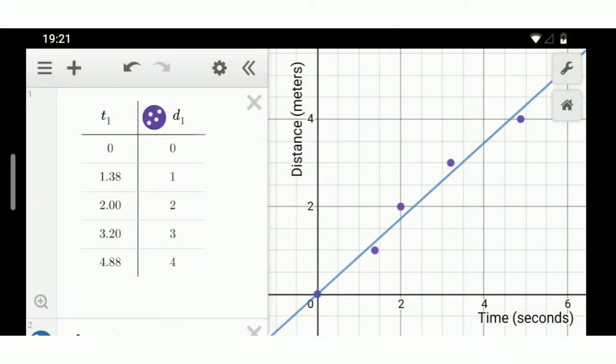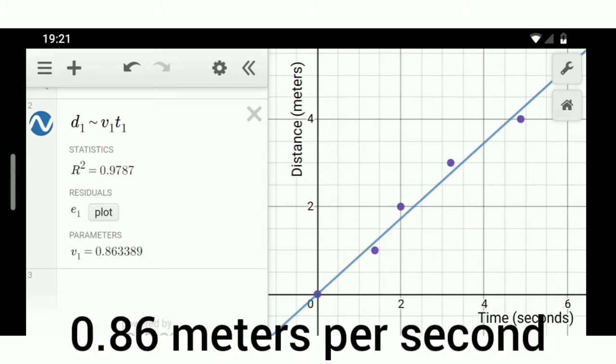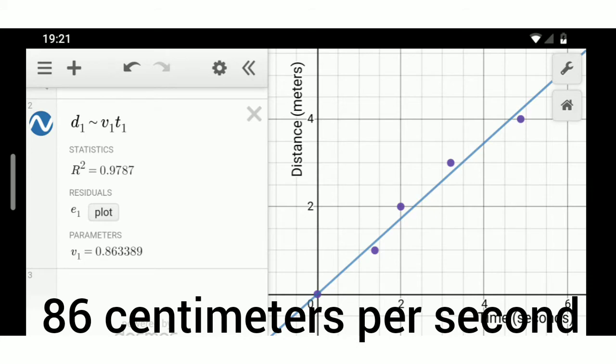The points would fall near the line for a marble moving at a constant velocity. And when we analyzed the line, we found a slope of 0.86, about 0.86 meters per second, or 86 centimeters per second.